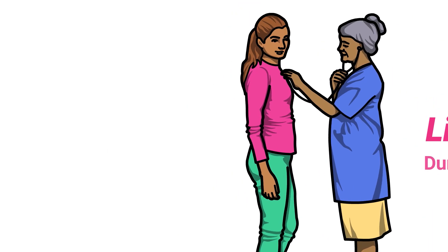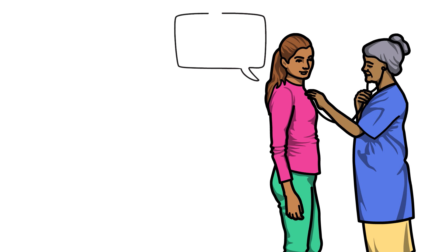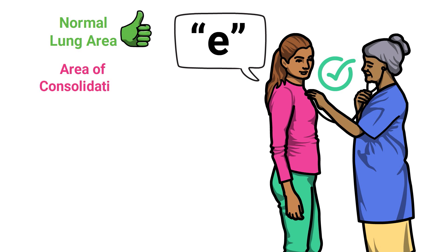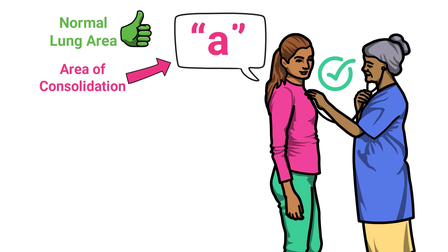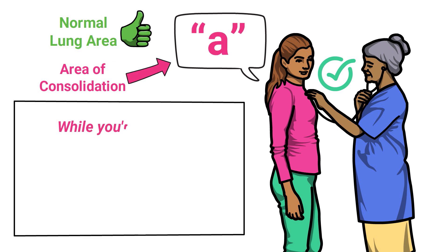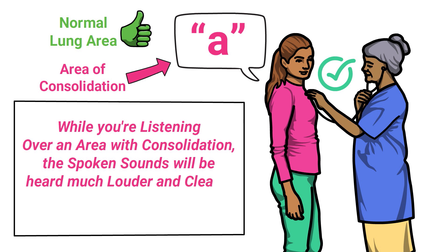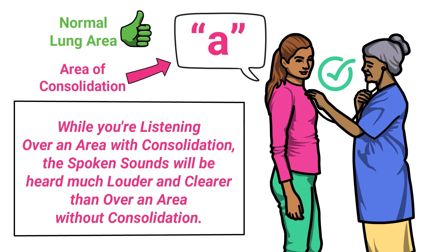To perform this type of assessment, instruct the patient to say the vowel 'E' as you auscultate their chest, and compare both sides of the lungs. Over a normal area, the E sound will be heard as normal. However, over an area of consolidation, the E sound will be heard as 'A' instead. Also, while listening over an area with consolidation, the spoken sounds will be heard much louder and clearer than over an area without consolidation.